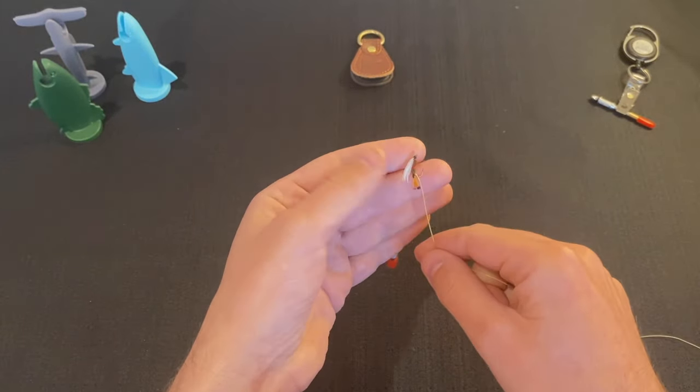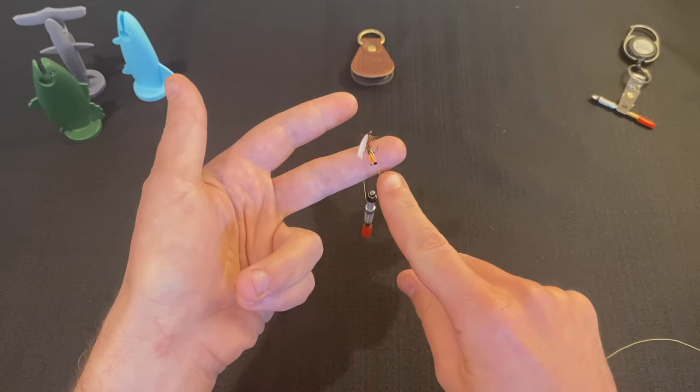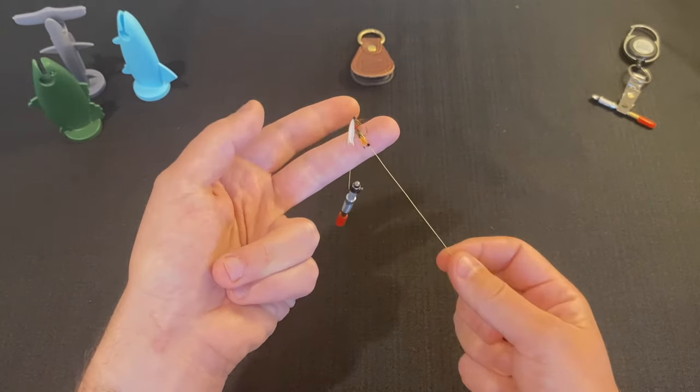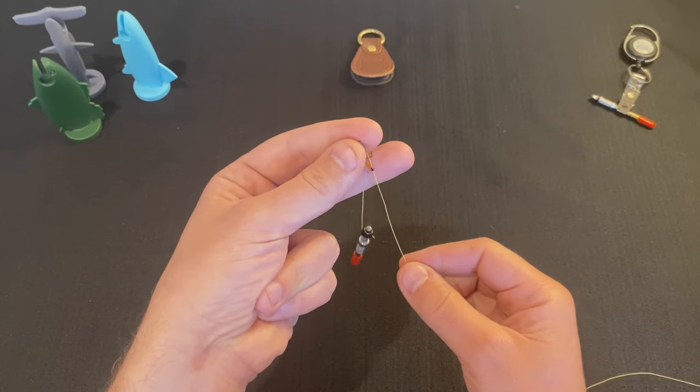I'm going to drape it over the hook of my lead fly and what this does is it leaves tension on the bend of the hook so it doesn't come off the bend or you don't lose your fly.